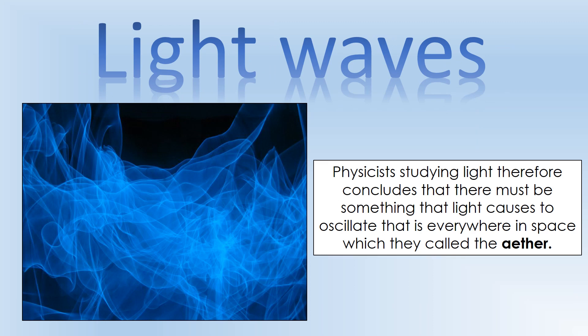So physicists studying light were like, well, light's behaving like a wave. We've seen it do things like interference and diffraction, so we know it behaves like a wave. So it must be oscillating something, and that thing is what they called the ether. They think it's the thing that permeates all of space that light is oscillating in order to travel. So that's where the idea of the ether comes from.